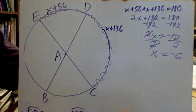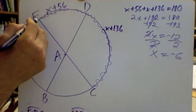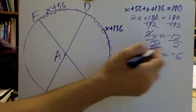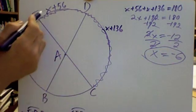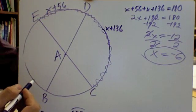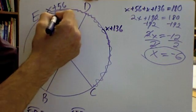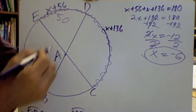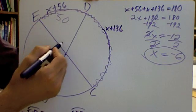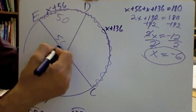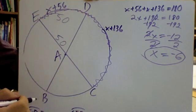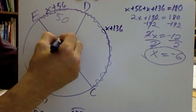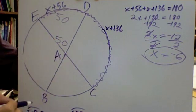And every time I figure out what X is, I always plug it back in. So here, arc ED was X plus 56. Well, now I know X is negative 6. So I'm going to say negative 6 plus 56. Well, negative 6 plus 56 is 50. I know if the arc is 50, then so is the central angle. Angle EAD is 50. Sorry, that's a little sideways. Let me fix that. That's a little better. 50.